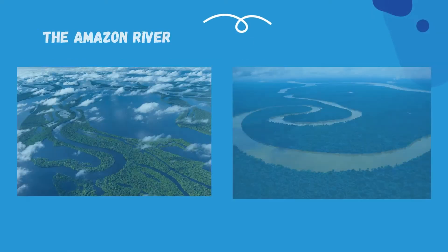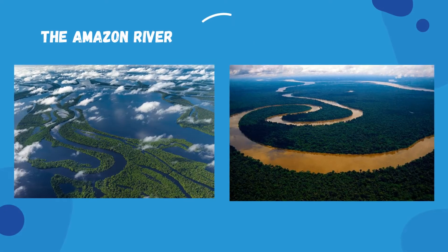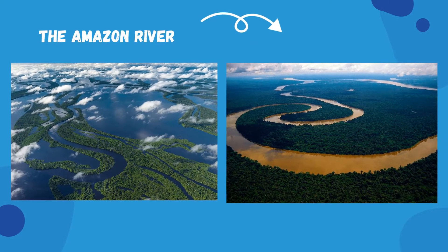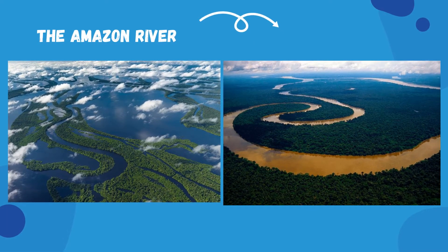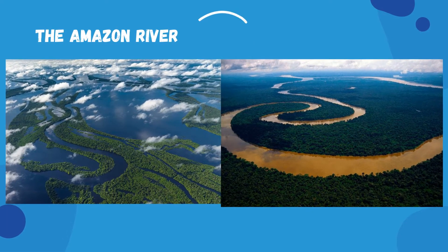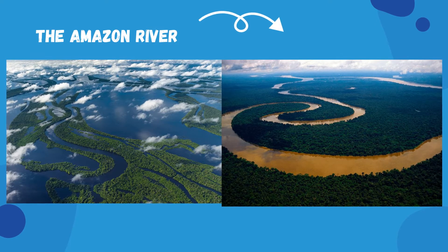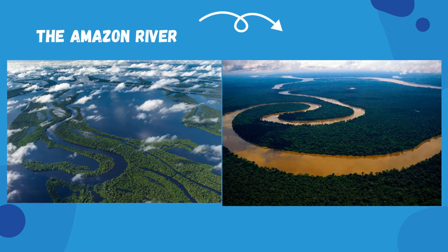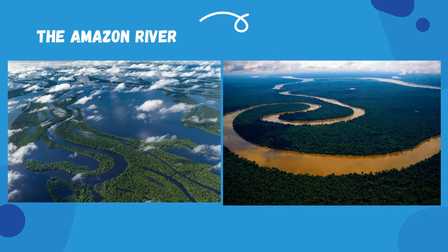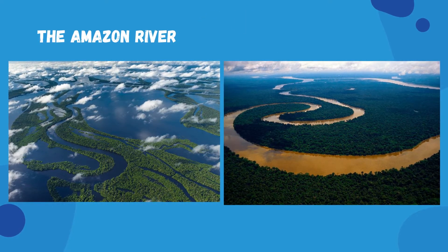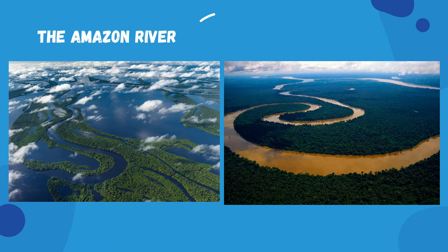The Amazon River is the second longest river in the world. It runs through three different countries: Brazil, Peru, and Colombia.